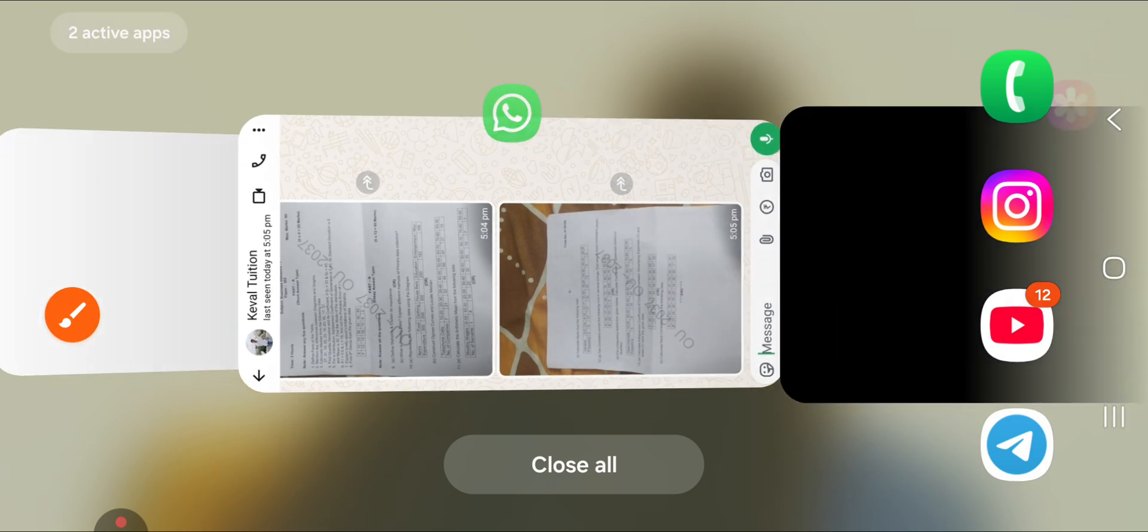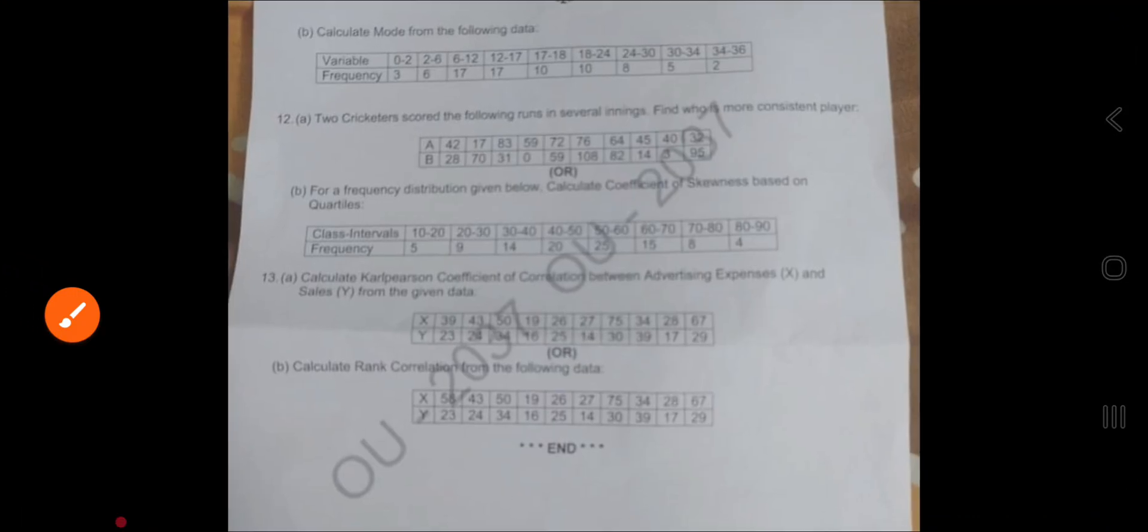Rank correlation formula: 1 minus 6 sigma d square by n of n square minus 1. Each and every question has been given. So I hope everyone who followed my videos can absolutely score O grade in this subject. This will be the easiest paper in your third semester.